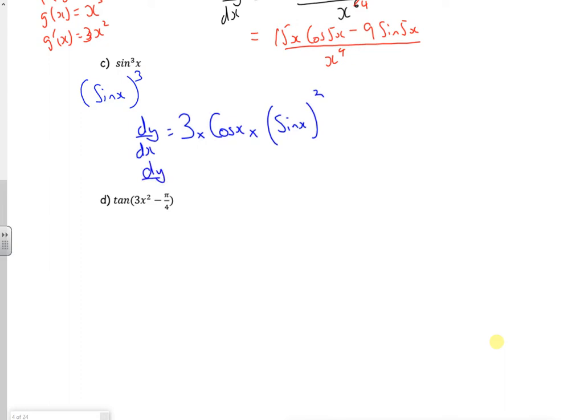So I end up with 3 cos x sine squared x. There. Alright, let's have a look at this one. So D says, we've got tan of 3x squared minus pi over 4. I know the tan becomes sec squared, so it's sec squared 3x squared minus pi over 4.